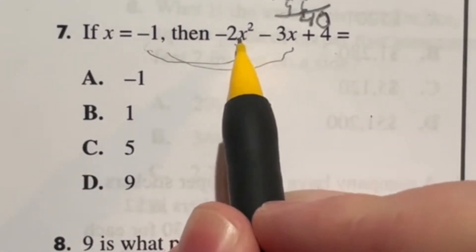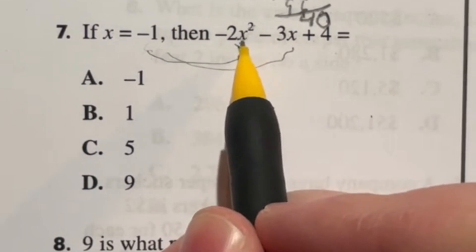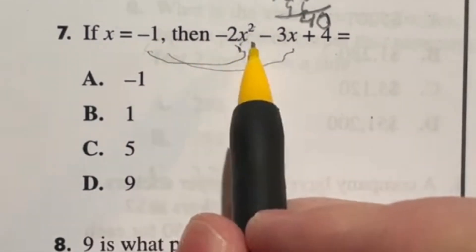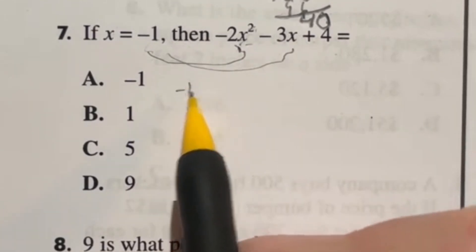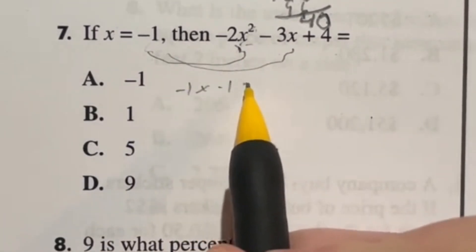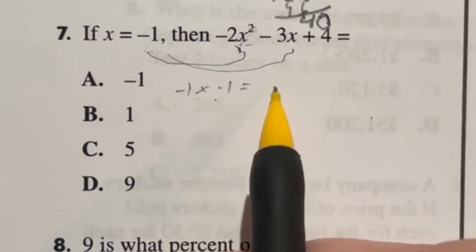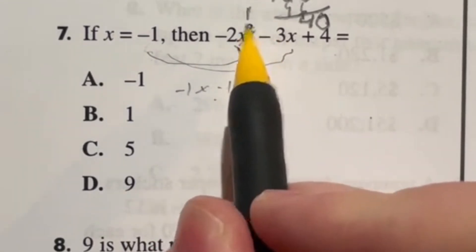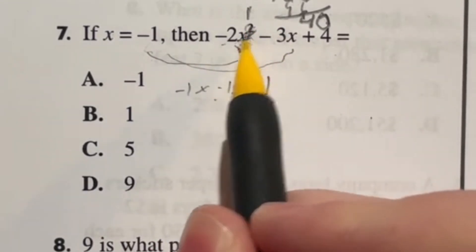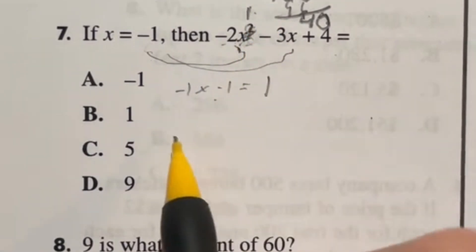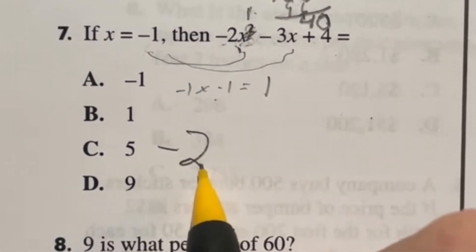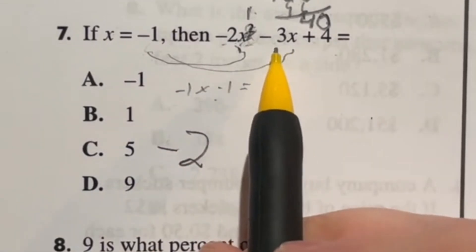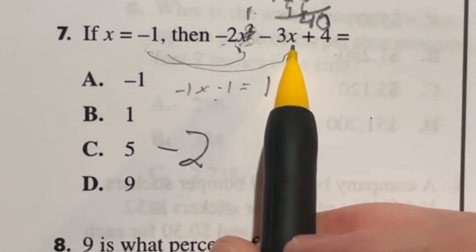When I plug in the negative one right here to this x, you actually have to make sure you square that first by order of operations. So in this case, negative one squared means you're doing negative one times negative one. A negative times a negative just gives you a positive and one times one is just one. So we have just one when I plug it in here.